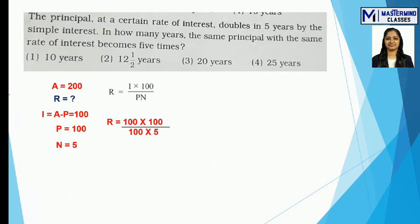Reducing: the 100s cancel. Then 5 × 20 = 100, so R = 20%. That answers the first part of the question.